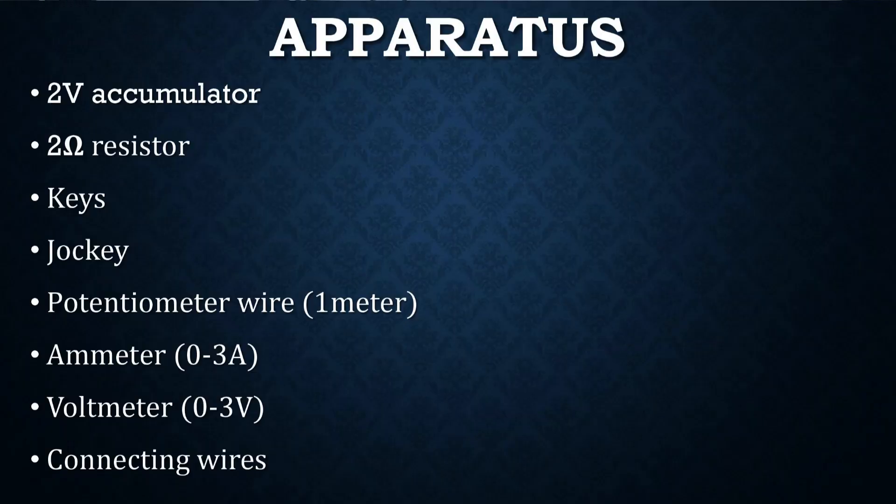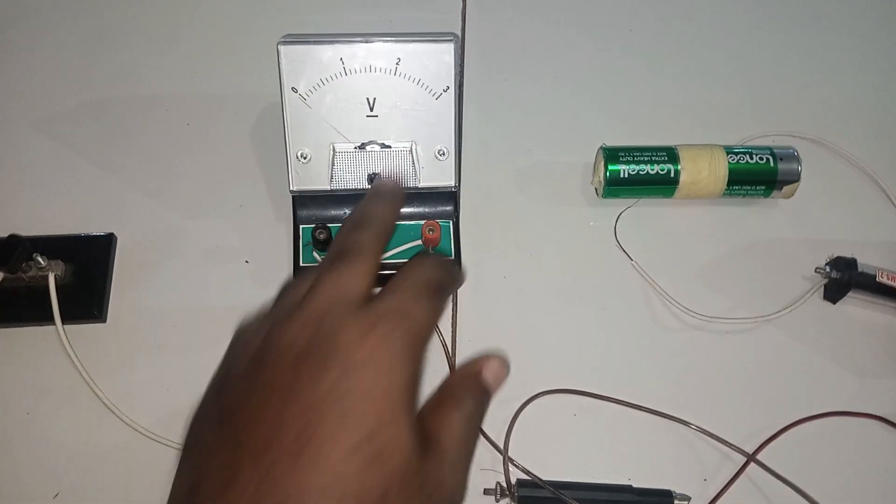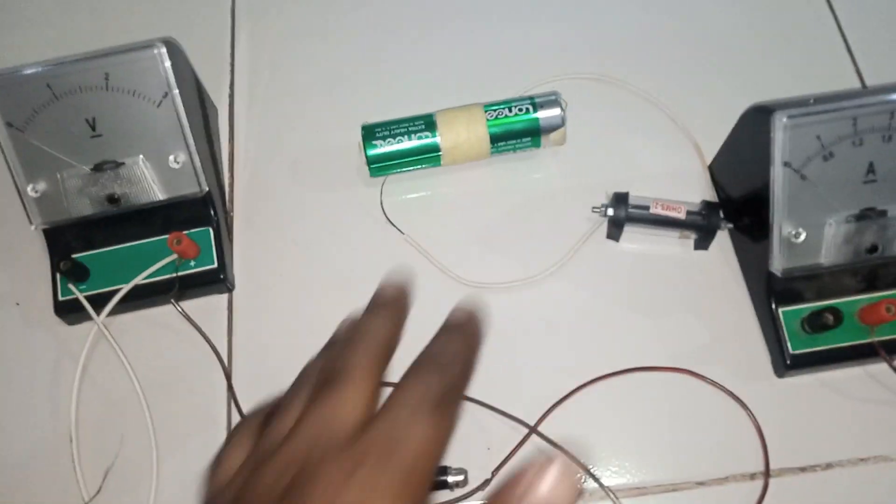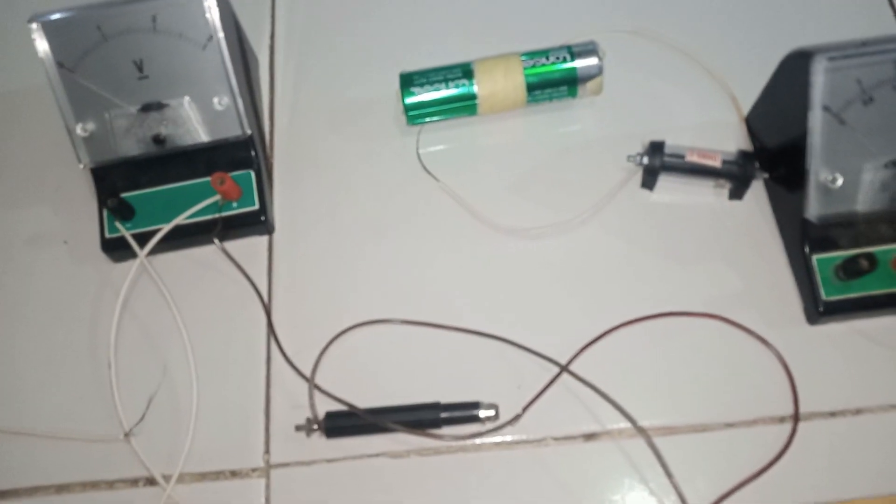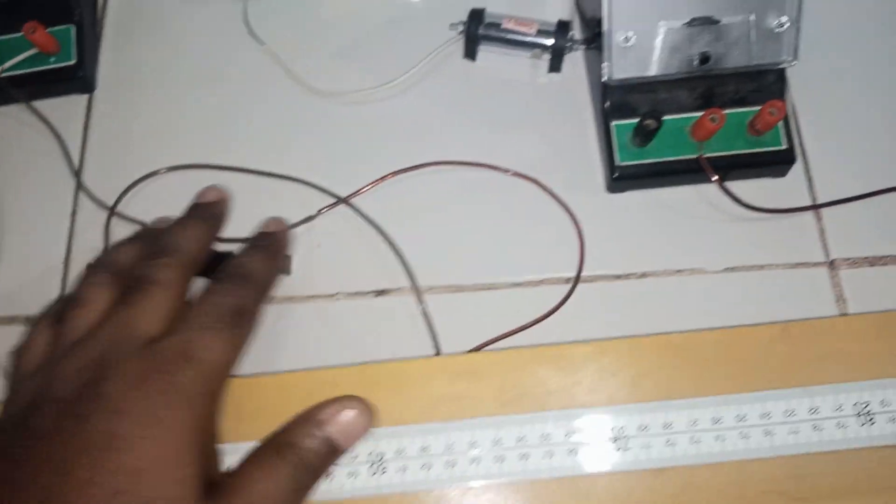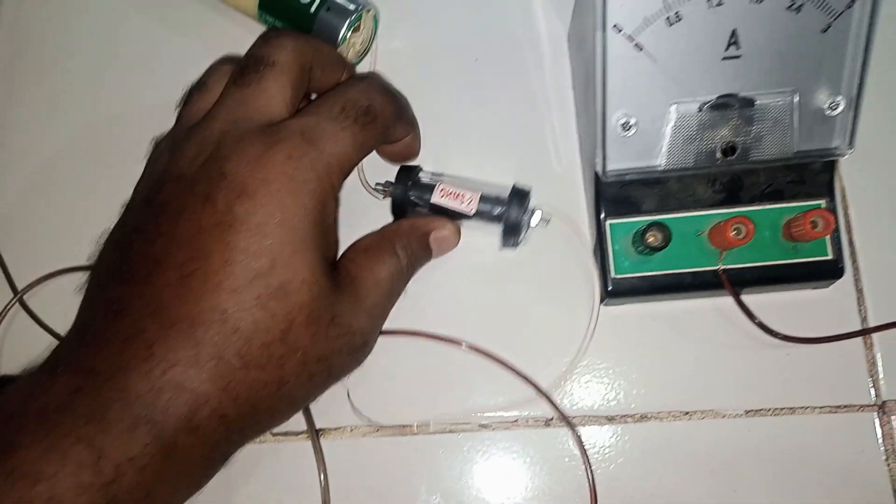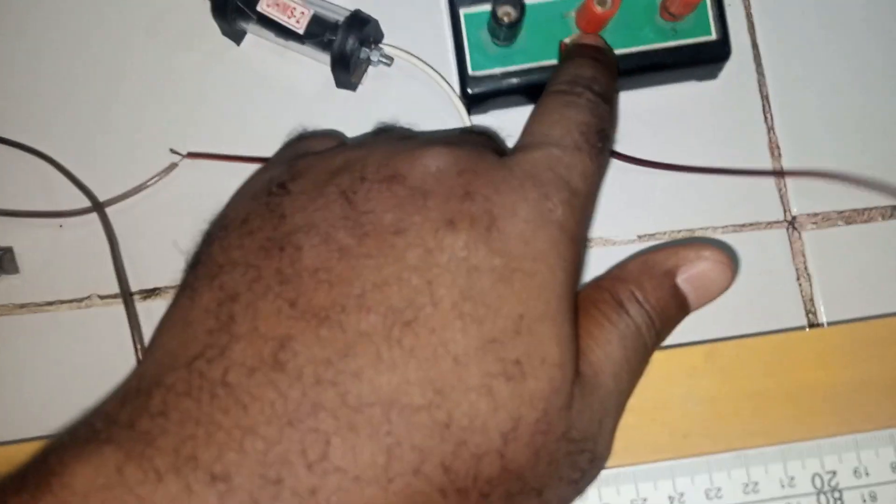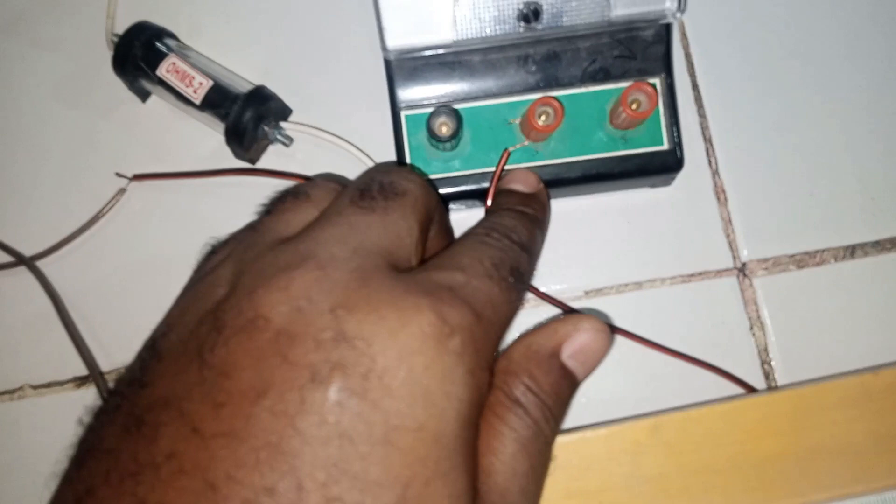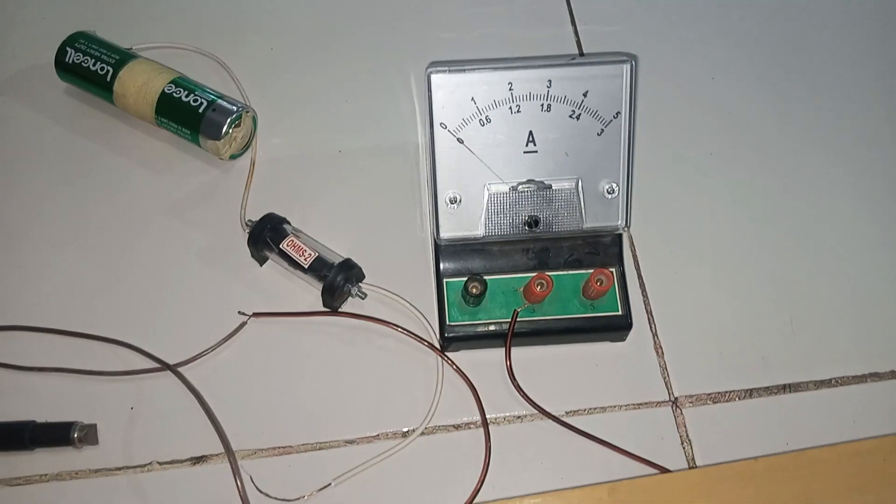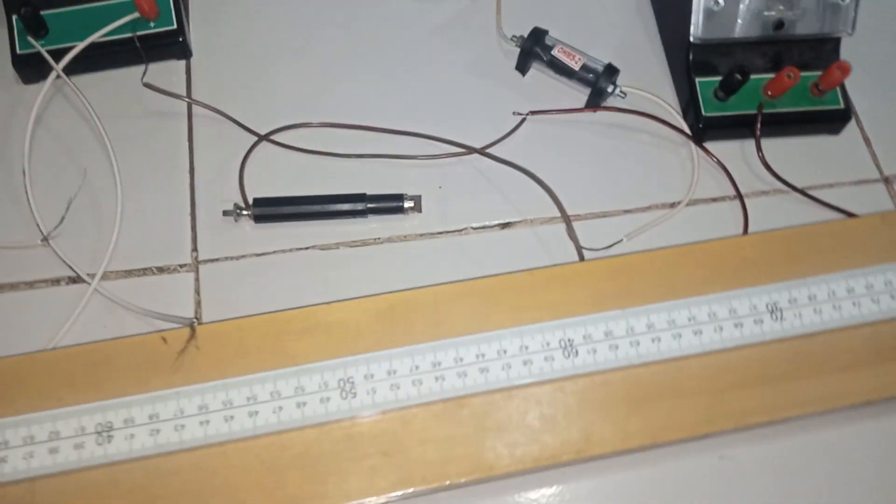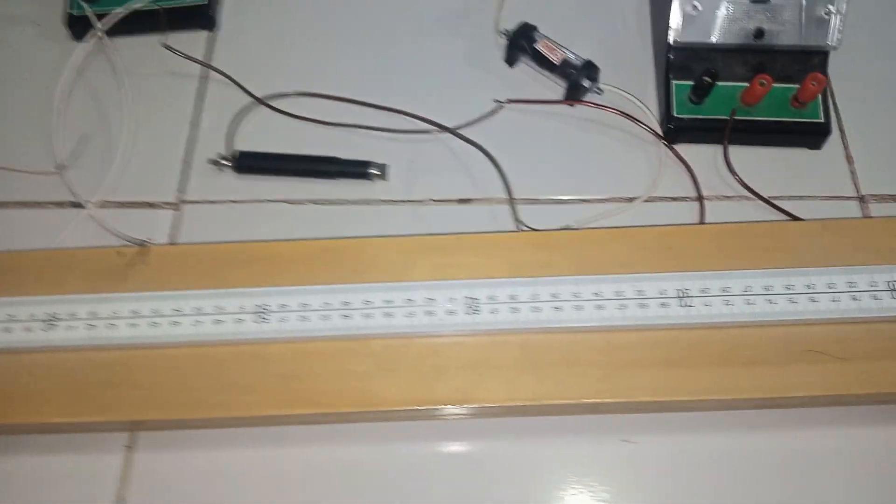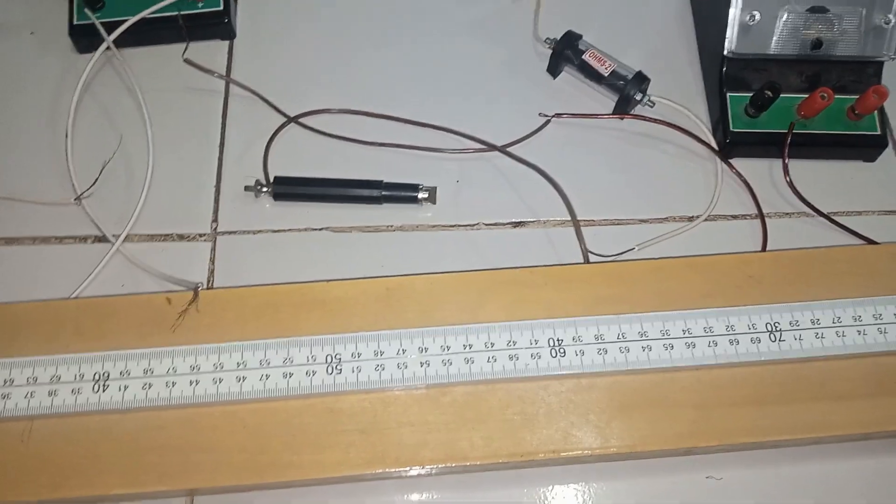Our apparatus for this particular experiment is the potentiometer here, the key, a voltmeter—here is a 0 to 3 voltmeter, a cell of about 3 volts (if you have 2 volts you can still use it), here is a jockey, and then we have a 2 ohm resistor and an ammeter. We are using the 0 to 3 range, you can see I connected to 3 here, not 0 to 5. So we are going to set up this experiment as you are seeing it already now on the diagram there.